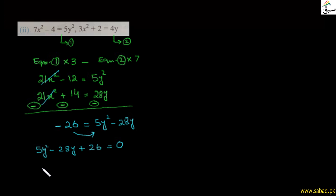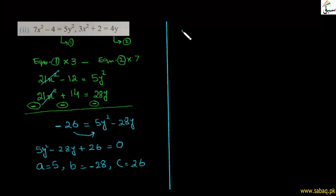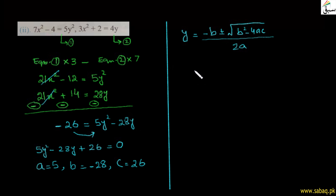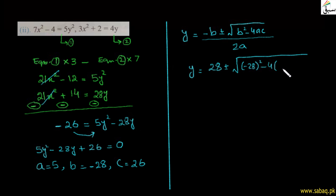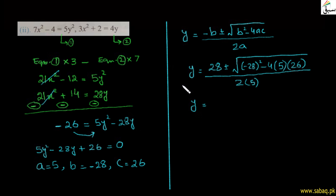اس quadratic equation میں a = 5، b = −28، c = 26 ہے۔ Quadratic formula y = (−b ± √(b² − 4ac)) / 2a لگائیں: y = (28 ± √(784 − 520)) / 10۔